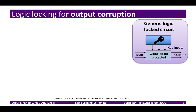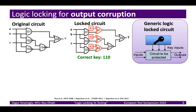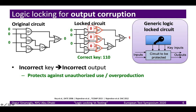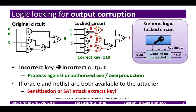Output corruption is an easy objective to meet. Earlier logic locking schemes used key gates controlled by key bits — when the correct key is in place the output is fine, and when incorrect the output fails. This gives good output corruption and protection against overproduction. However, attacks like SAT and sensitization can extract the key when output corruption is too high, because they quickly learn about incorrect key behavior relative to correct key behavior and prune away incorrect keys. So corruption is good to have, but too much is not.